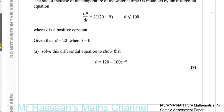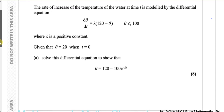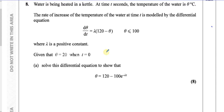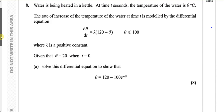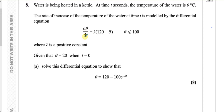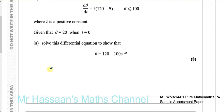What we have to do is solve this differential equation, which is already given to us. Solving a differential equation means, if it says dθ/dt, it's to make theta the subject, as shown in what we have to prove it becomes. So we have to make theta the subject. I'm going to write down that we have dθ/dt equals lambda times (120 minus theta). That's what we have to solve.